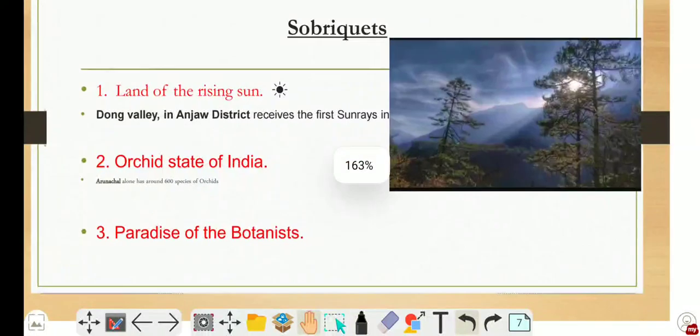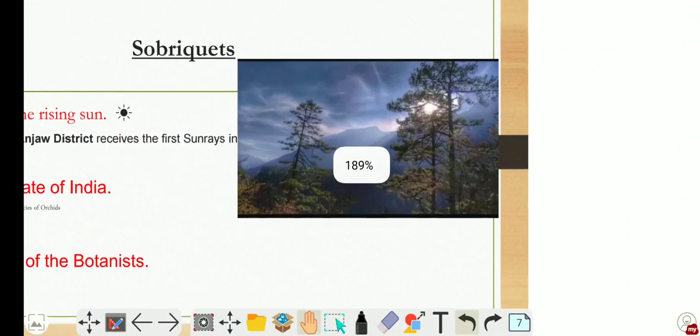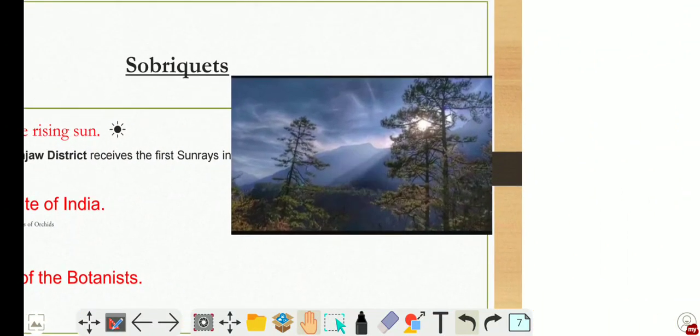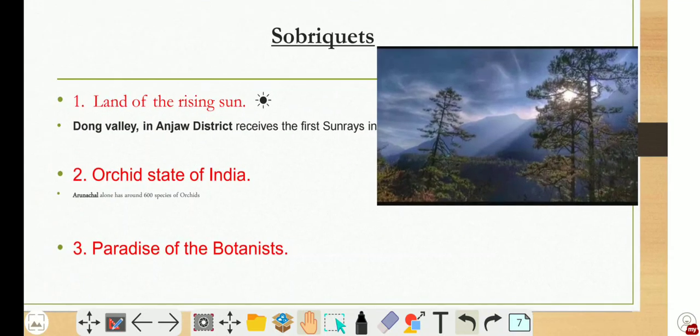This is a glimpse of the Dong Valley. I have not taken the photo but got it somewhere from the internet. The second point is the Orchid State of India. Arunachal is also called the Orchid State of India because Arunachal Pradesh alone has around 600 species of orchids. Also, Arunachal Pradesh has established orchid conservation sanctuaries at Sessa and Dirang.